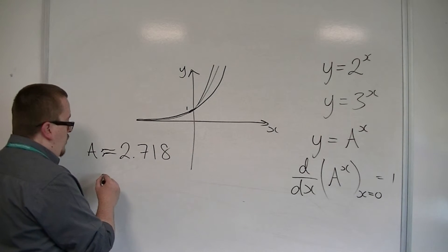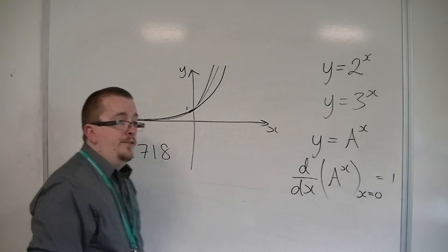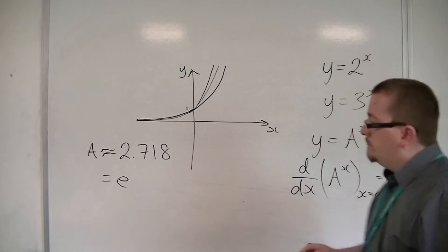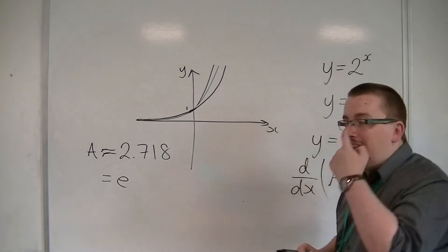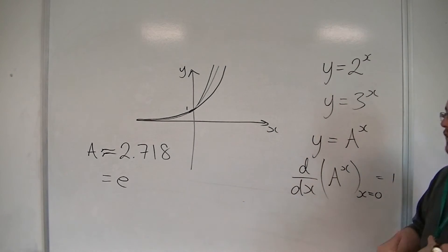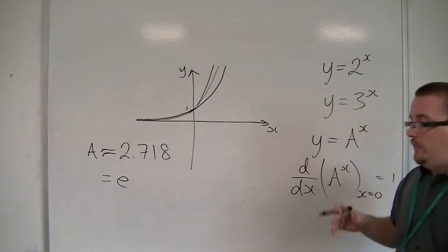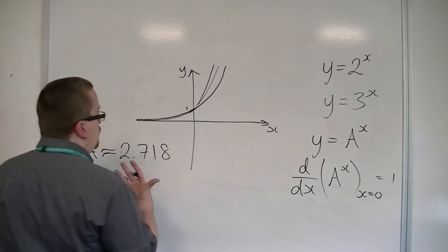It's actually equal to a number that we define as e. Because of this, it can also be explained that e to the x is its own derivative.